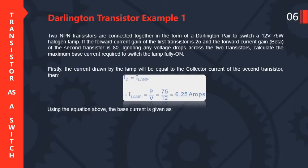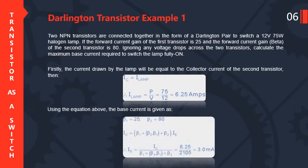Using the equation above, the base current is given as: with beta1 equals 25 and beta2 equals 80 (given), we apply the formula IC equals (beta1 plus beta2·beta1 plus beta2) times IB. Rearranging, IB equals IC divided by (beta1 plus beta2·beta1 plus beta2). Substituting the values, the base current IB equals 3.0 milliamperes.